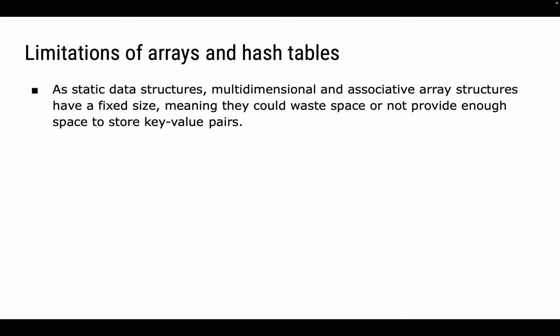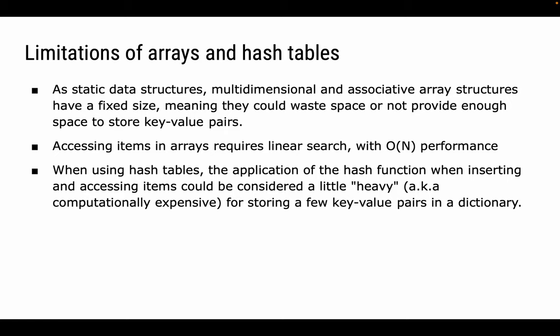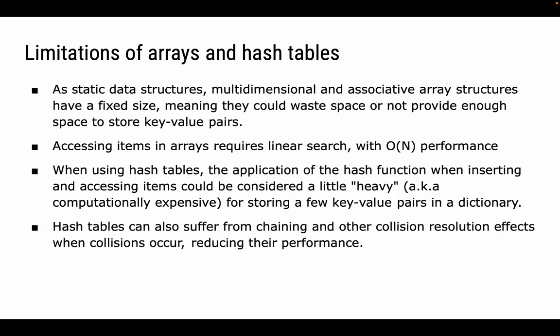But arrays and hash tables do have limitations. Because they are static data structures, multidimensional and associative arrays will have a fixed size, and that means that they could waste space or not provide enough space to store our key-value pairs. And as we've seen, accessing items in arrays requires a linear search, which has O of N performance, which is OK if it's a small number of items, but if it gets larger, it's something we wish to avoid. On the flip side, using a hash table involves the application of a hash function every time you insert or access any items, which could be considered a little bit computationally expensive, especially if we're just storing a few key-value pairs in a dictionary. And hash tables also suffer from other problems with hash tables, including chaining and other collision resolution effects whenever a collision occurs, which is going to reduce their performance. So if we just want a simple dictionary, these approaches work, but they're maybe not always the best.